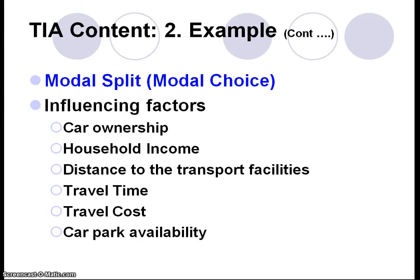The second step is modal split. After knowing where people want to go, we split the trip-makers into various modes of transport. This is based on car ownership, household income, distance to transport facilities, travel time, travel cost, and car park availability. If residents have cars, most likely they will use cars. However, if the distance is far, they will usually choose public transport. Similarly, if driving is too expensive, people will use public transport — but if public transport is too expensive or too poor in quality, not many people will use it.